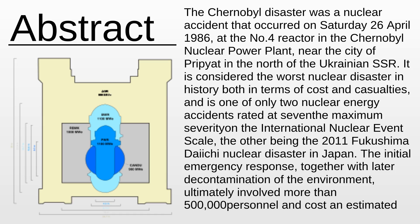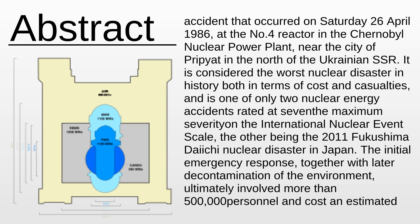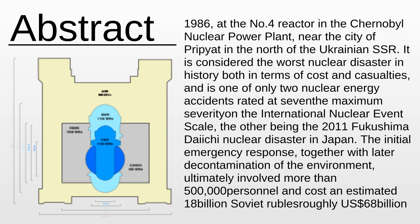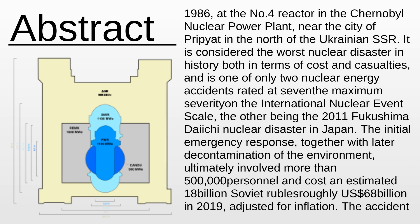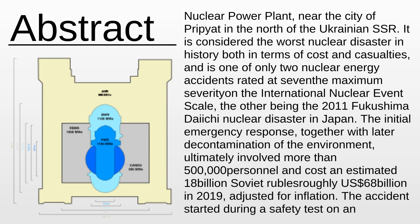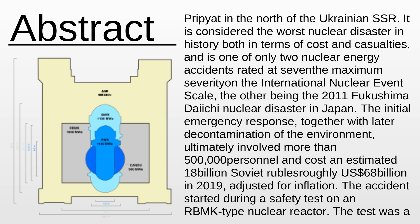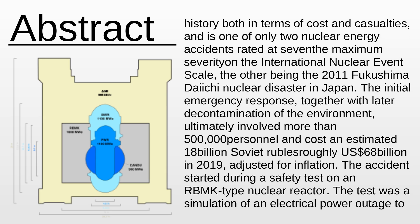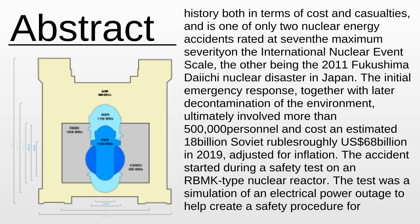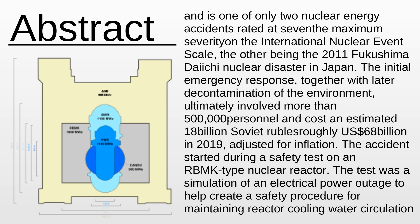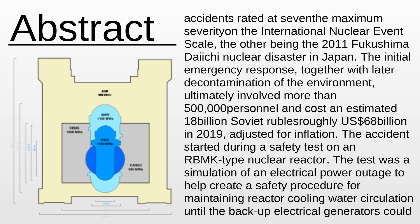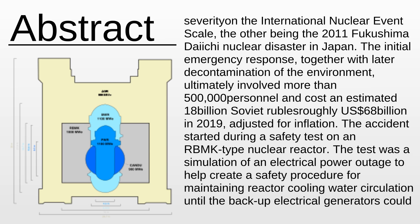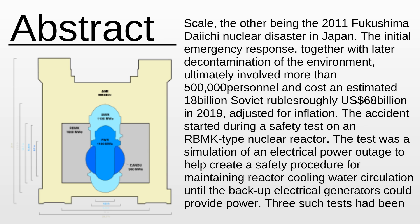The Chernobyl disaster was a nuclear accident that occurred on Saturday, April 26, 1986, at the No. 4 reactor in the Chernobyl nuclear power plant, near the city of Pripyat in the north of the Ukrainian SSR. It is considered the worst nuclear disaster in history both in terms of cost and casualties, and is one of only two nuclear energy accidents rated at 7th maximum severity on the international nuclear event scale, the other being the 2011 Fukushima Daiichi nuclear disaster in Japan.